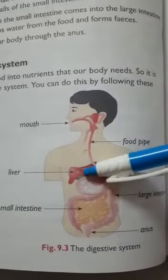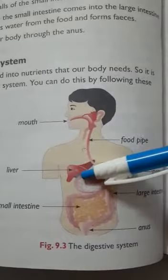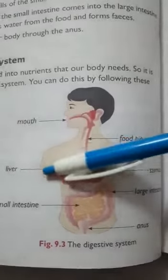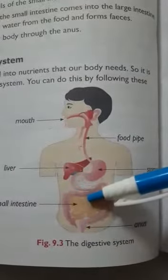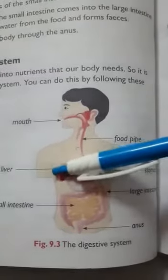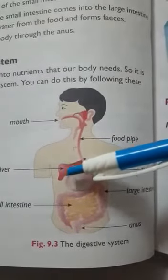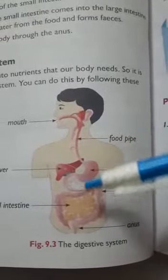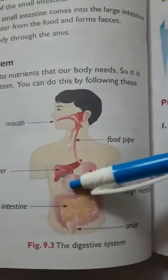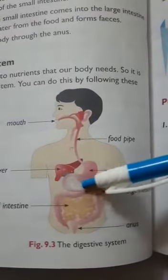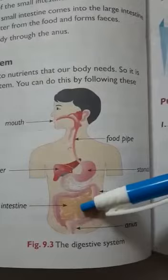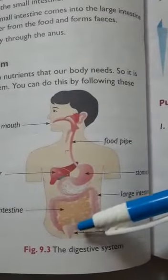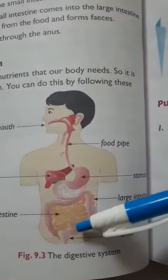The liver releases a digestive juice called bile juice into the small intestine. From the stomach, food goes to the small intestine, where this bile juice mixes with it.